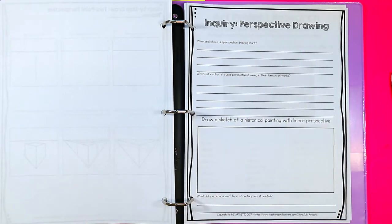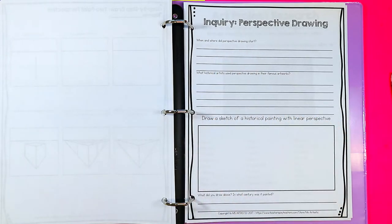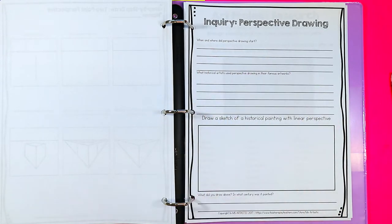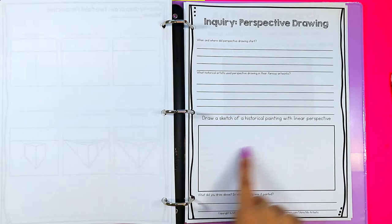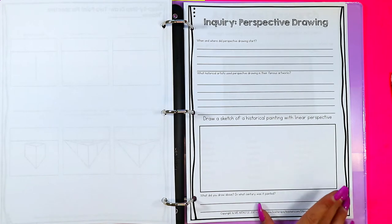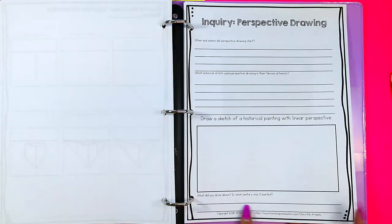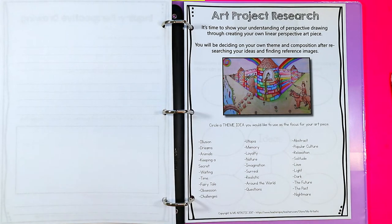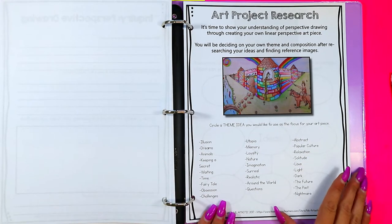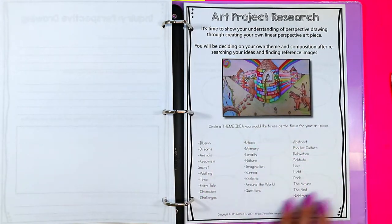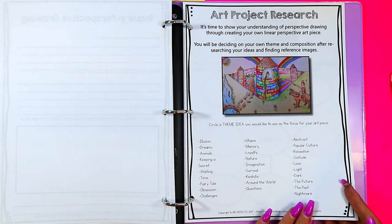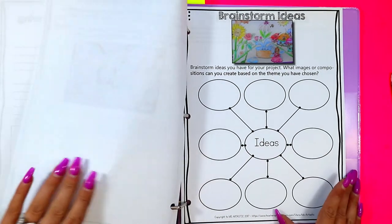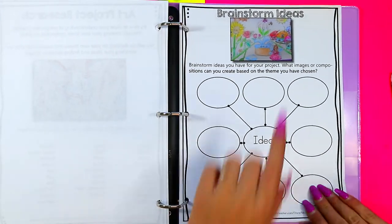But this one provides an inquiry. So they can go on adventure either in books or online. Search up when and where did perspective drawing start. Historical artists using perspective drawing in their famous artworks. They can sketch a painting that they found that has linear perspective and then talk about in what century it was painted. And then they have an art project to do. So there's art project research. They get to pick a theme of what they want to do and then create their own art project that uses linear perspective and it gives lots of different ideas for that. They can brainstorm some ideas around the theme for a world that they might create.